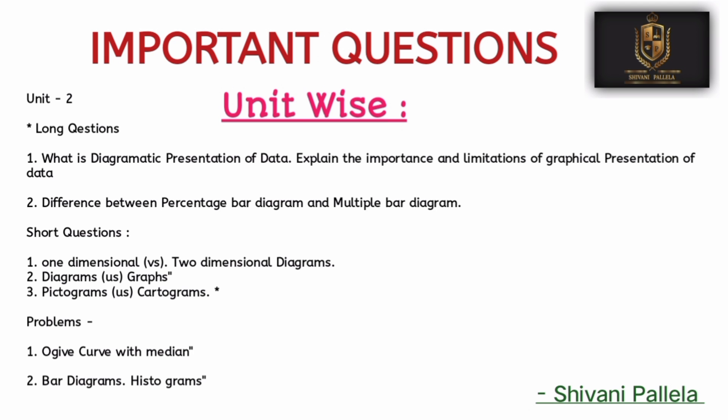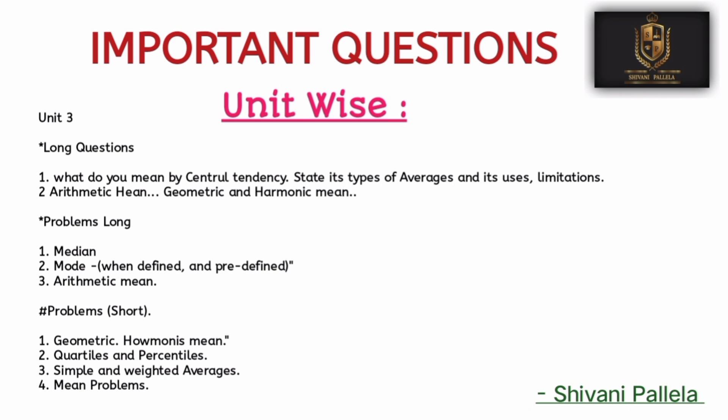Unit Number 3 covers central tendency. The question 'What do you mean by central tendency?' is very very important from this unit. For problematic questions: harmonic mean, geometric mean, quartiles, percentiles, and simple and weighted average. For long questions: mean, mode, and arithmetic mean.